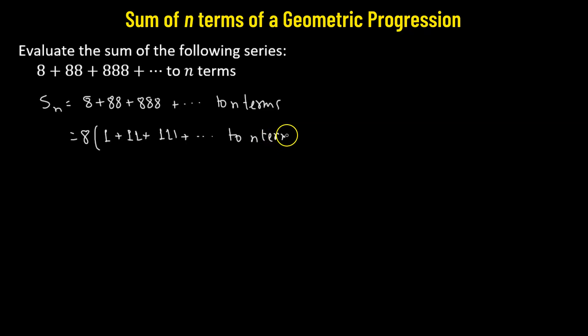Now in the next step, we'll multiply each of the terms by 9. Since we are multiplying by 9, we'll also have to divide the entire series by 9. So 8 over 9 multiplied by 9 plus 99 plus 999, this goes all the way up to n number of terms.